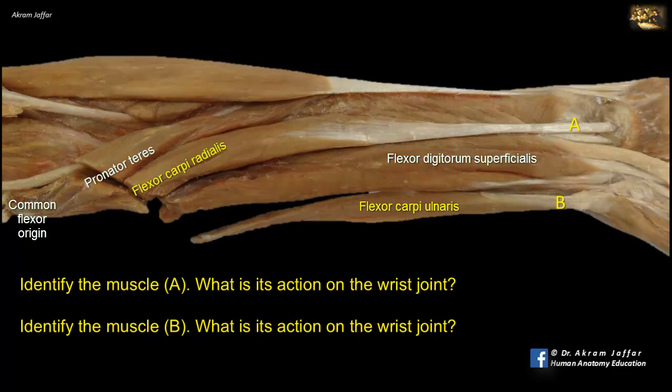However, the muscle has an extra origin, not shown here, by means of an aponeurosis from the posterior subcutaneous border of the ulna. The tendon of flexor carpi ulnaris is inserted into the pisiform bone, which is considered a sesamoid bone in the tendon of the muscle, because there is another ligament extending from the pisiform bone to the fifth metacarpal bone called the pisometacarpal ligament. The two muscles have a weak flexor action on the elbow since they arise from the common flexor origin proximal to the elbow. But most importantly, they are distally attached to the metacarpal bones, and hence they flex the carpus at the wrist joint.